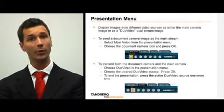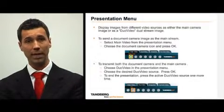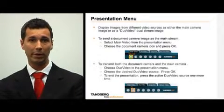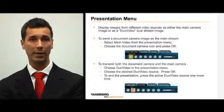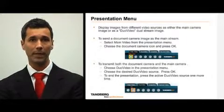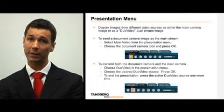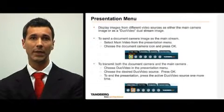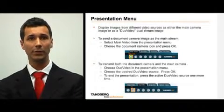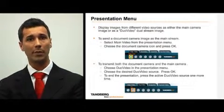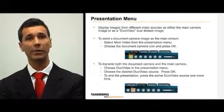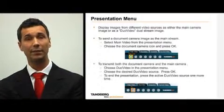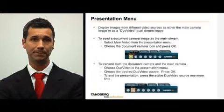To transmit both the document camera and the main camera, instead of selecting main video, choose duo video instead from the presentation menu. Next, select the desired duo video source. In this case, choose the document camera and press OK. To end the presentation, press the active duo video source one more time.